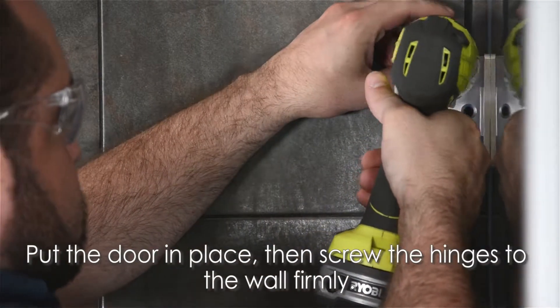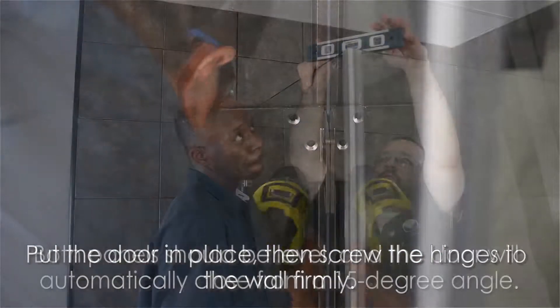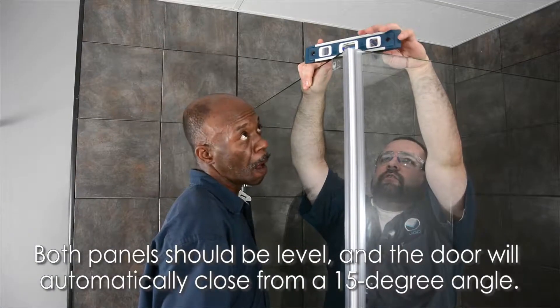Put the door in place and screw the hinges to the wall firmly. At this point, both panels should be level.